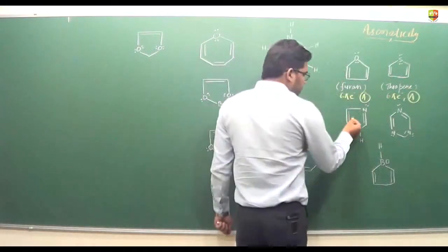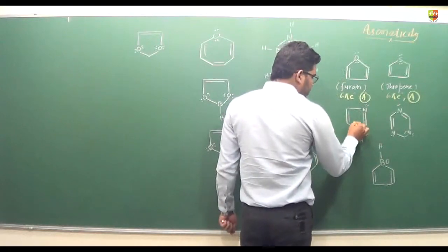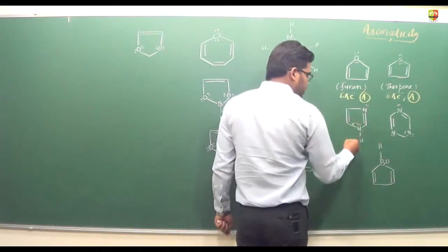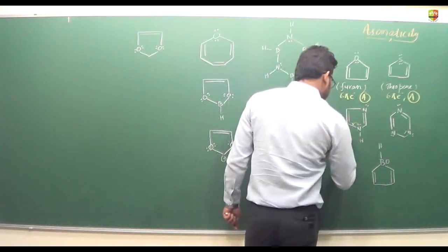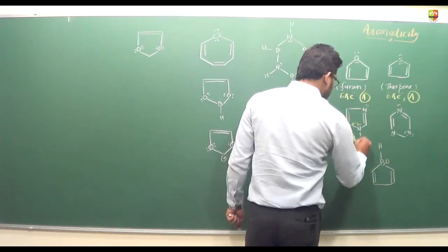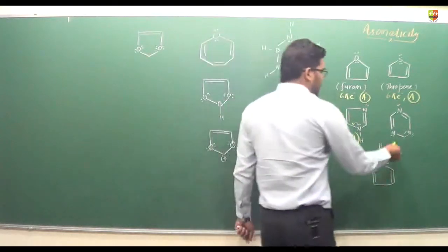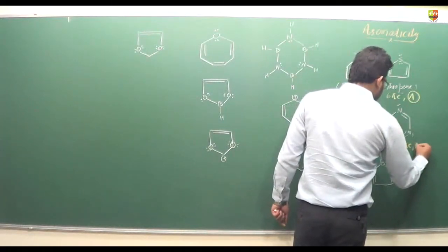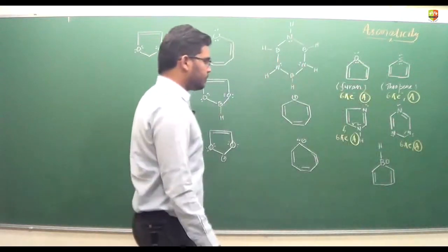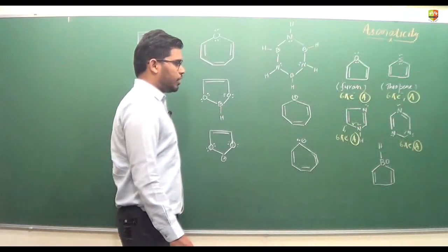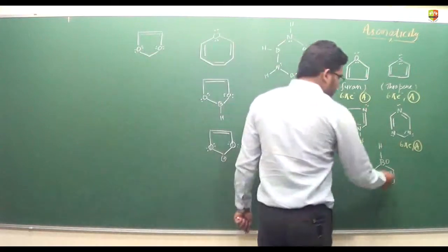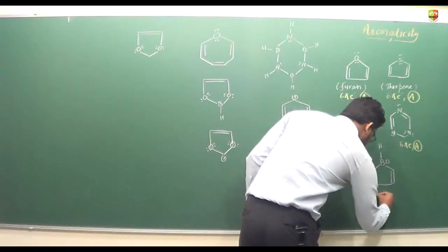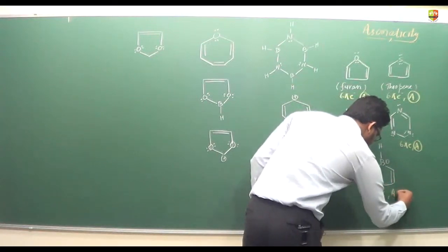In pyrrole, one lone pair is involved in resonance and the other is not. Counting 2, 4, 6 pi electrons — this molecule also has 6 pi electrons and is aromatic. Similarly, another example has 2 pi bonds plus a lone pair giving 6 pi electrons — aromatic. In this one, resonance is possible because of a vacant p orbital: 2 plus 2 gives 4 pi electrons — anti-aromatic.